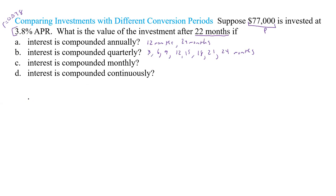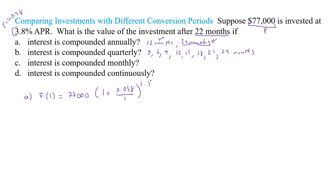For Part A, compounding annually with only 22 months elapsed: have we reached 24 months, which is when the next compounding would occur? No — we've only completed one full year at 12 months. The investment just sits there until 24 months, so we're looking for f(1). That gives us 77,000 × (1 + 0.038/1)^(1×1).